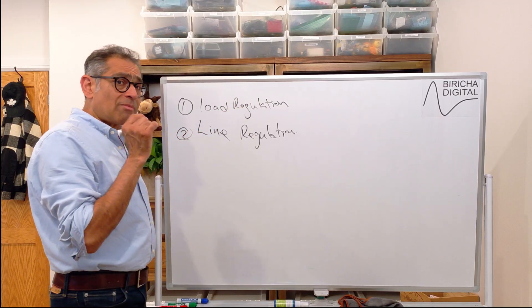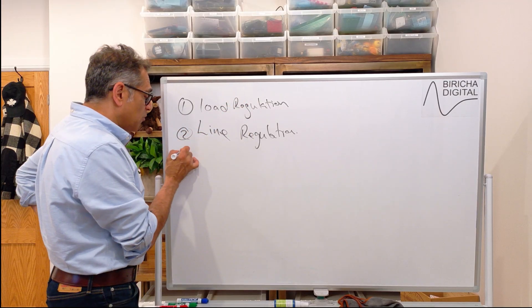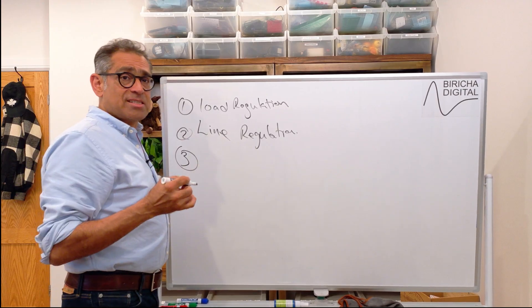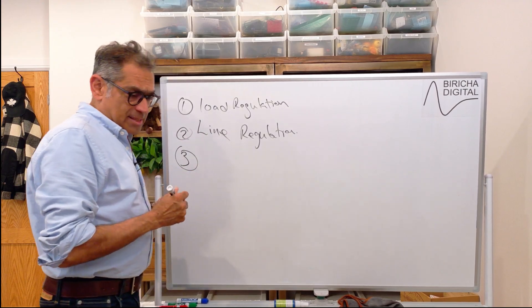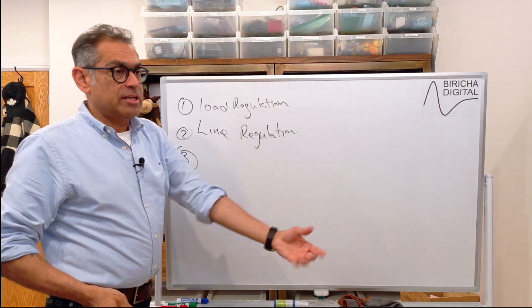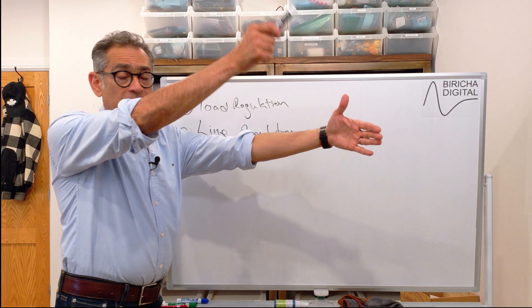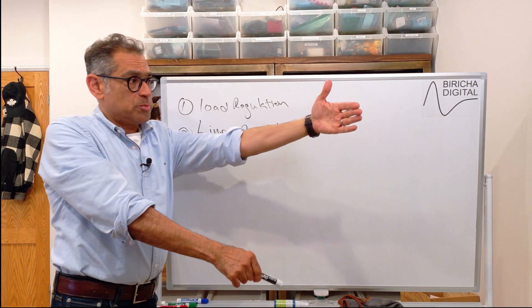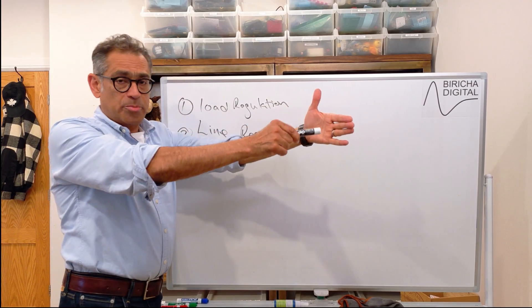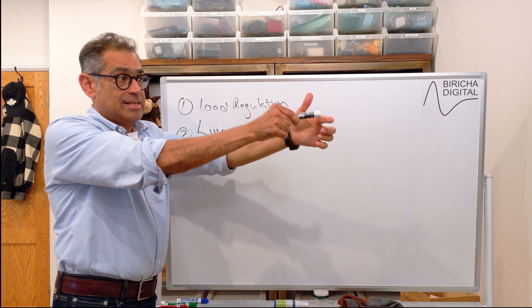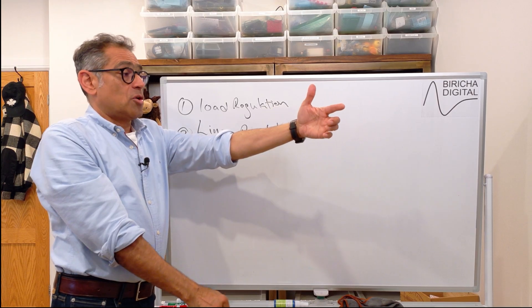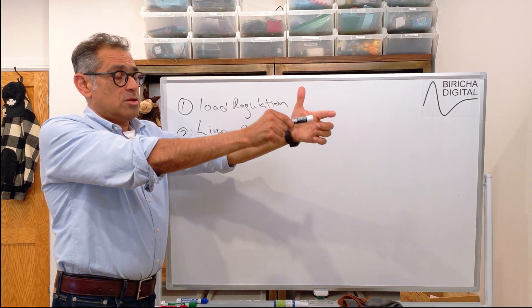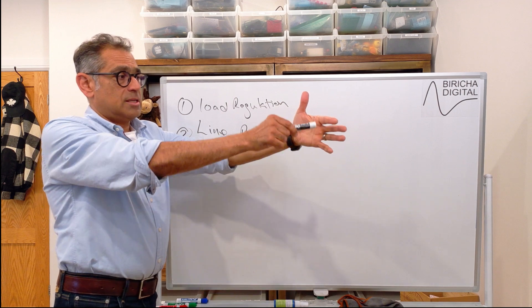Then another thing that we're always looking for is what we call transient response. Imagine that you have an industrial robot that is welding and you want to move from this position to that position and you want to put a spot weld on this exact position.